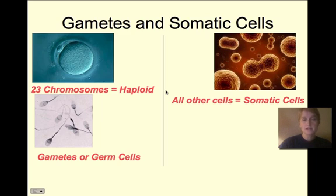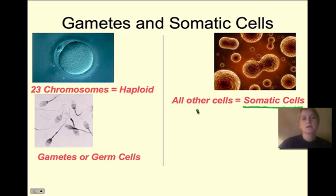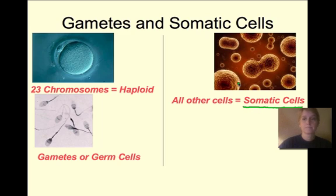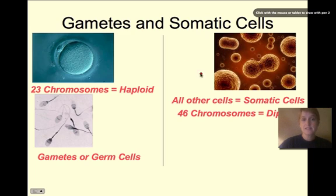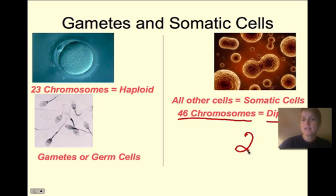Somatic cells means any cell in the body that is not a gamete — it could be a nerve cell, a blood cell, a heart cell. Any cell that is not a gamete is considered a somatic cell, and they have 46 chromosomes. All cells except the gametes have 46 chromosomes, and that's considered diploid, indicated as 2n.